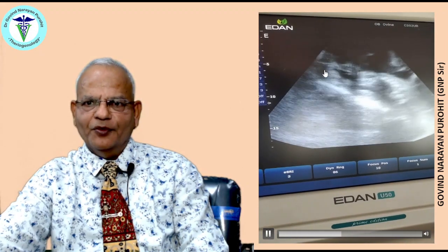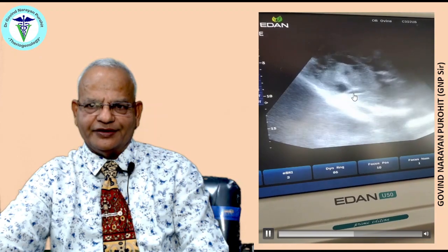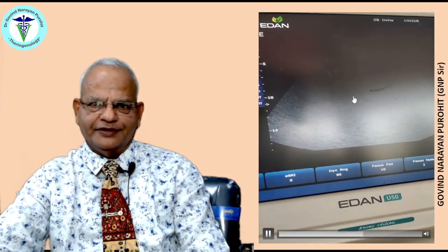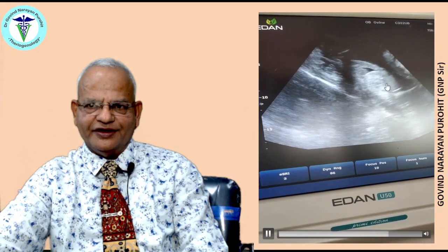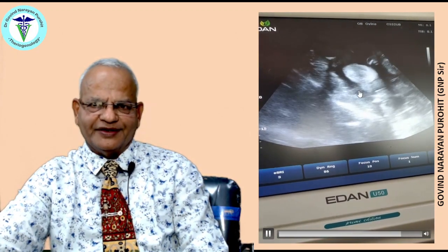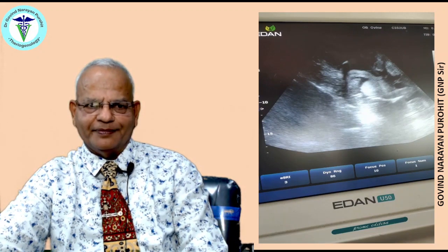This is the actual ultrasound being carried out on the same goat. You can see the fetal fluid — the anechoic fluids — the fetal bones, and the fetal heartbeat. You can see the fetal heartbeat and also the fetal movements. With practice you can visualize other structures of the fetus and the cotyledons. Even if you don't find other fetal structures, if you find the cotyledons and the anechoic fluid, you can very well confirm that the animal is pregnant.